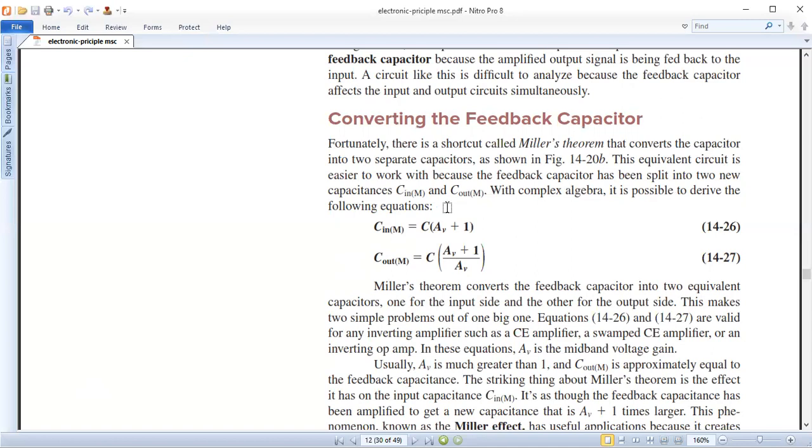For the equation, voltage gain plus one into the capacitance is calculated input Miller capacitance. Voltage gain plus one divided the voltage into the capacitance calculated output Miller Capacitors calculated.